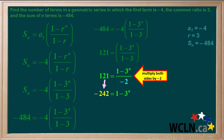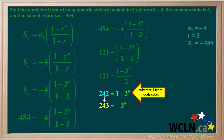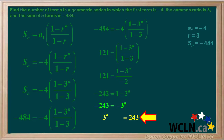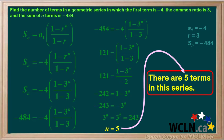Multiplying both sides by negative 2 gives us negative 242 equals 1 minus 3 to the power n. Subtracting 1 from both sides gives us negative 243 equals negative 3 to the power n, so 3 to the power n equals 243. Since 3 to the 5th power is also 243, n equals 5. Therefore, there are 5 terms in this series.